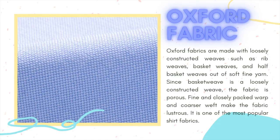Oxford fabric. Oxford fabrics are made with loosely constructed weaves such as rip weaves, basket weaves, and half basket weaves, out of soft fine yarn. Such basket weave is a loosely constructed weave, and the fabric is porous. Fine and closely packed warp and coarser weft make the fabric lustrous. It is one of the most popular shirt fabrics.